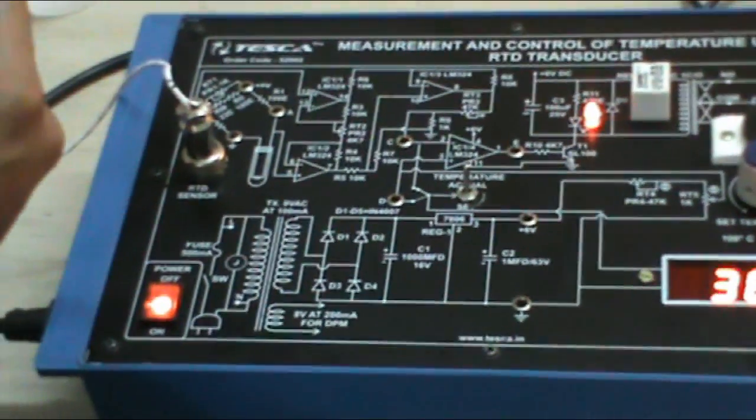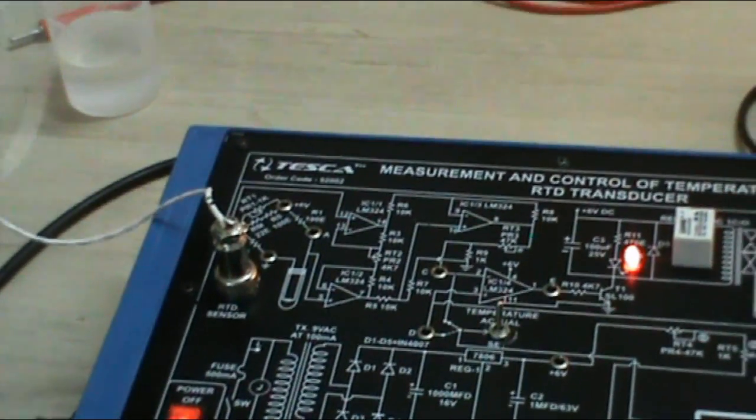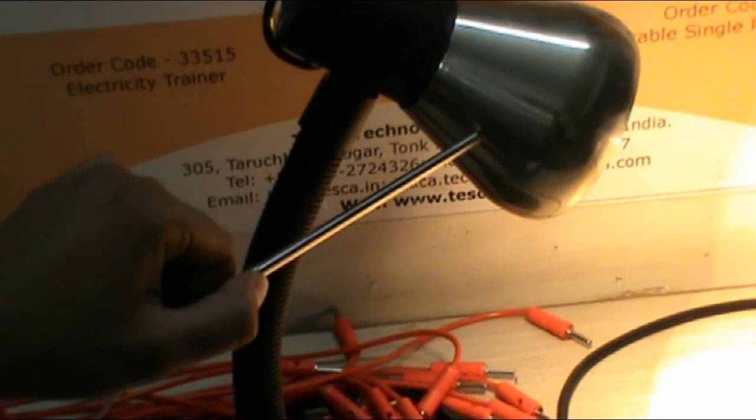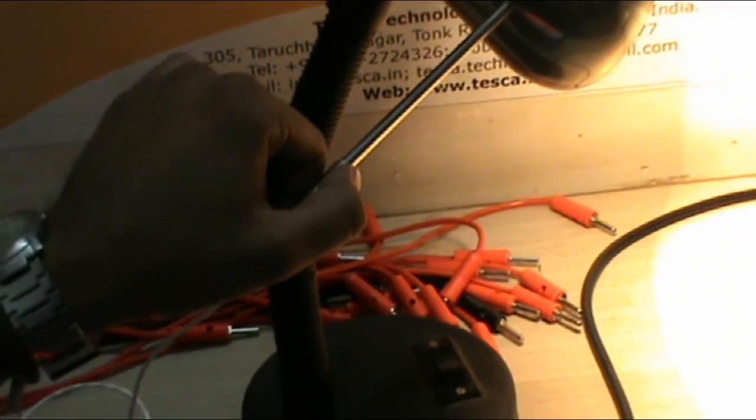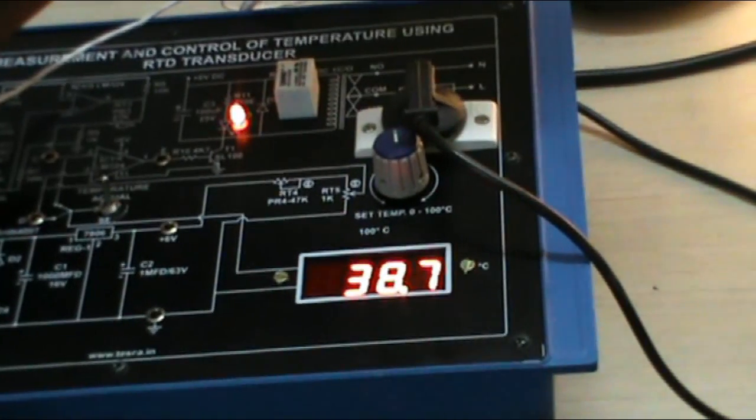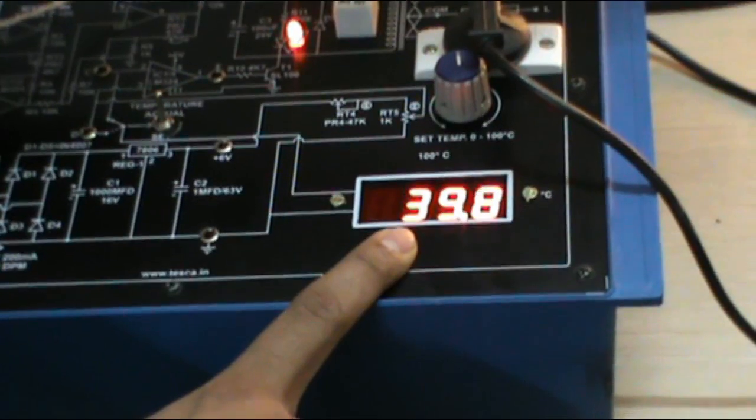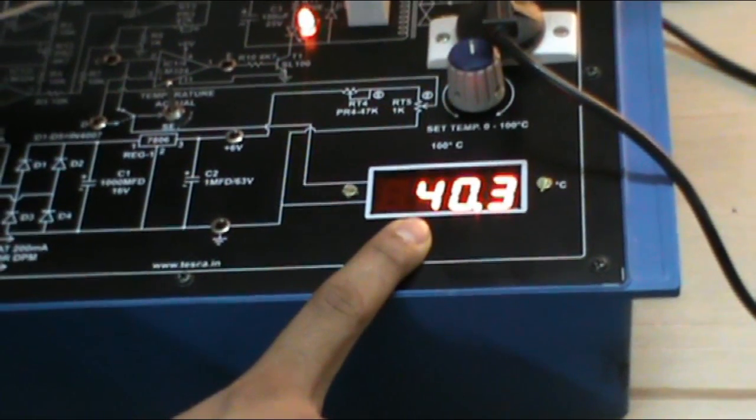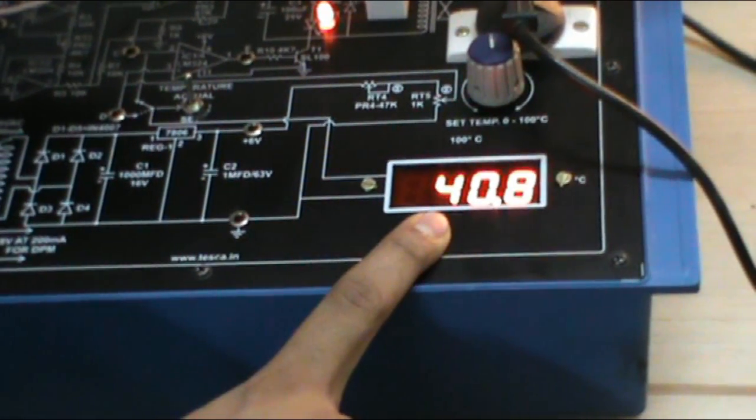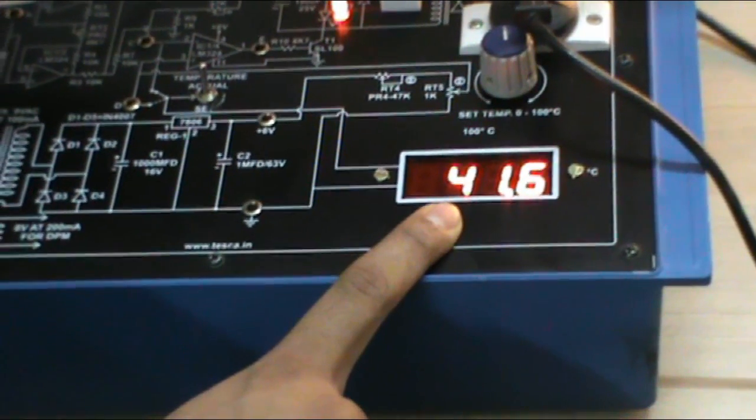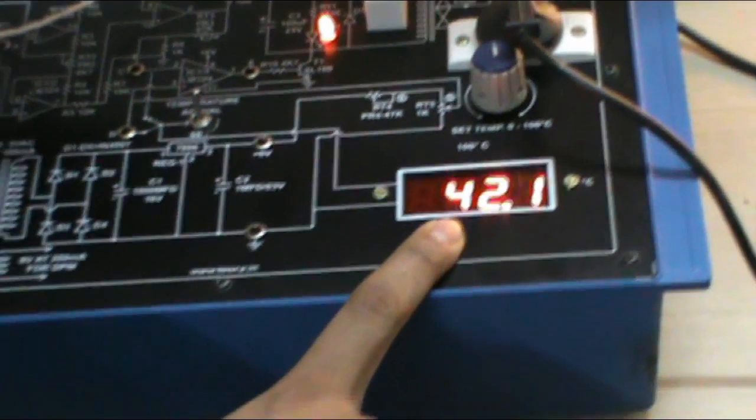Now, how to check that RTD sensor is sensing the temperature correctly? The base of this lamp is very hot. So as we connect this RTD sensor to the base of this lamp, the temperature will rise. As you can see, the temperature is rising due to the heat produced by this lamp.